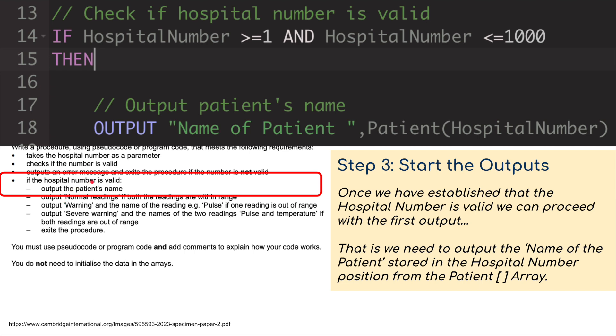Step three: if the hospital number is valid, output the patient's name. That's straightforward. If hospital number is greater than or equal to one and less than or equal to a thousand, then we output the patient's name. So output name of patient, and that's taking it from the patient array using the hospital number position.